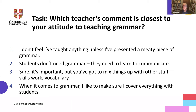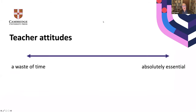It looks like numbers three and four are the most popular options. Number three suggests that grammar is important, but you can't just teach grammar on its own. If we think about teachers' attitudes, we can look at them in terms of a continuum — on one end, those who think teaching grammar is a waste of time and prefer communicative activities, and at the other end, those who believe grammar is absolutely essential to meeting their students' needs.